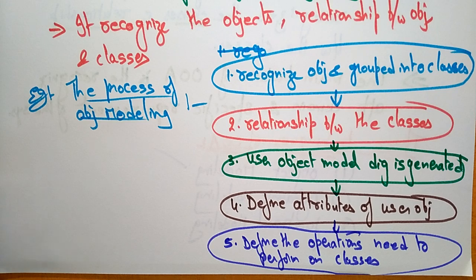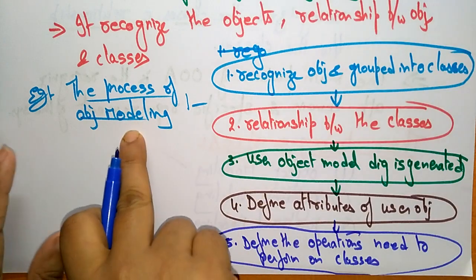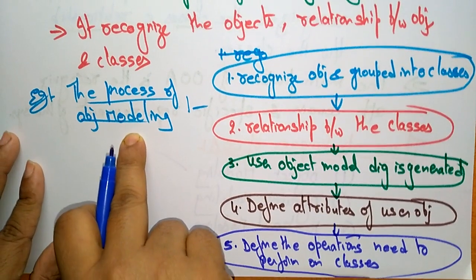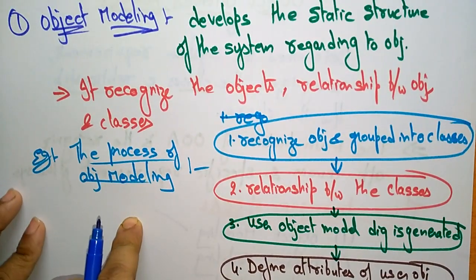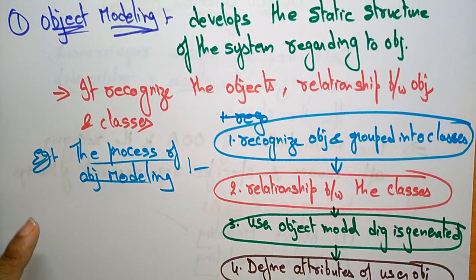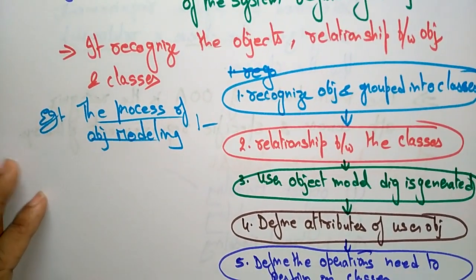Whenever you are asked about Object Oriented Analysis, try to explain what it is and write the three techniques present in it. The first technique I explained is Object Modeling. The remaining two techniques — Dynamic Modeling and Functional Modeling — I will explain in the coming videos. Thank you.